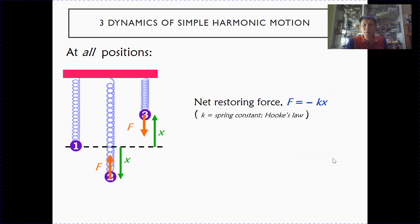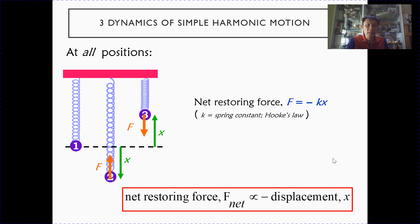At all three positions, including position one where displacement x equals zero, the net force is always given by the value of kx, and the negative sign shows that the direction of F is always opposite to the direction of the displacement. So the net restoring force for a mass-spring system is proportional to the displacement x and always opposite in direction.